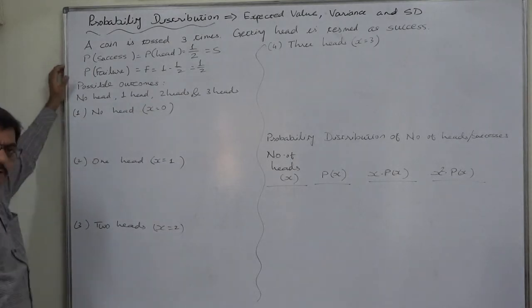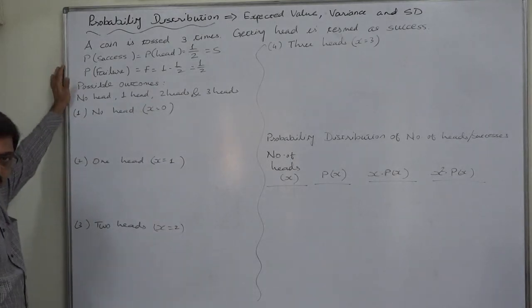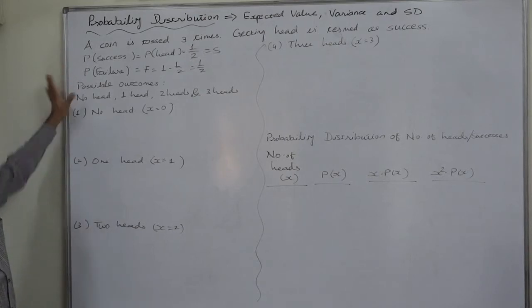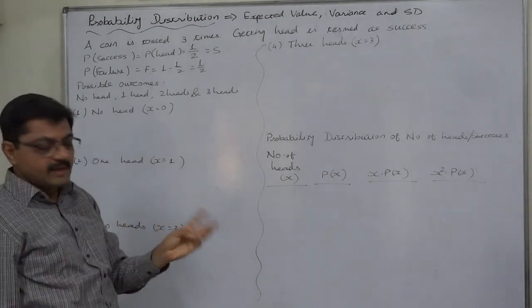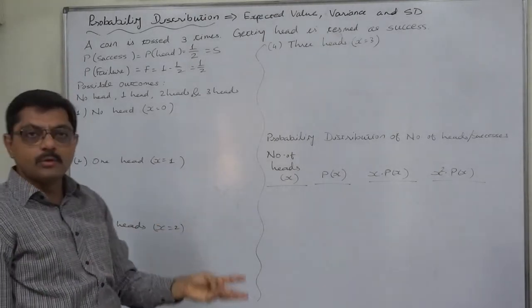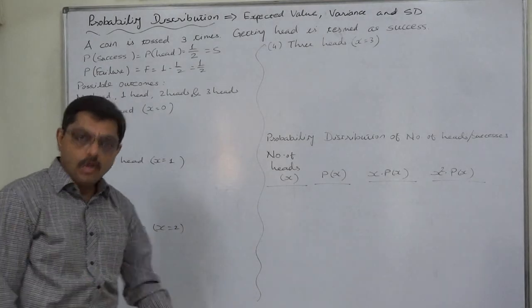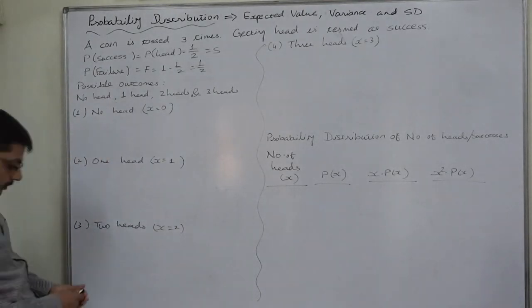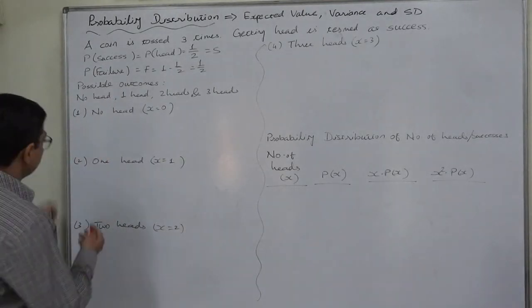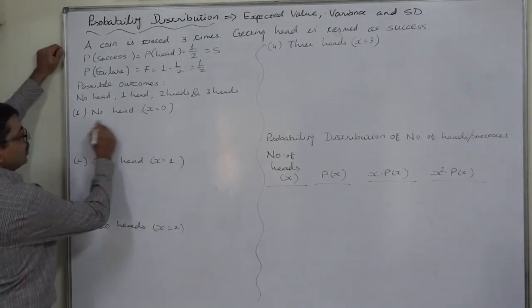The possible outcomes in case of three trials will be four: no head appears, one head, two heads, and all three heads. Let us calculate the probability of all the possible outcomes.